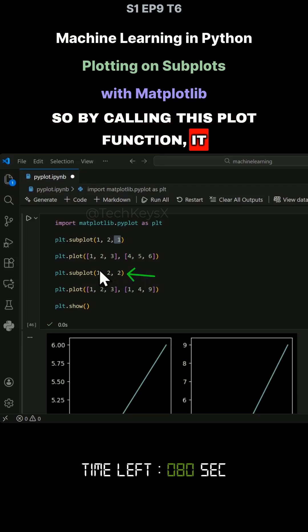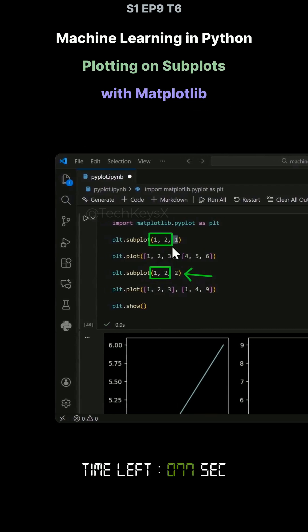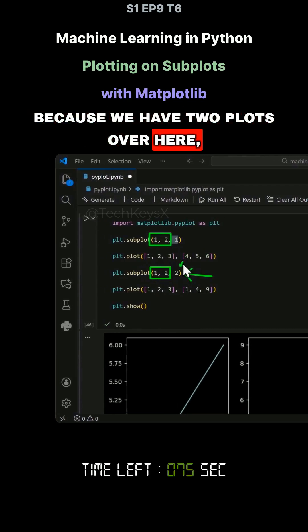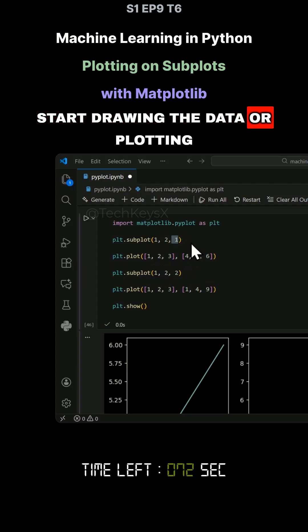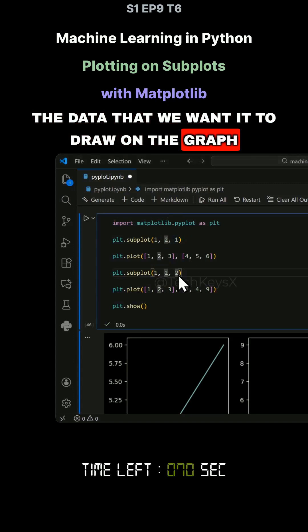So by calling this plot function, it needs to know where it needs to draw the line. So here we specified one. Because we have two plots over here, we wanted to select this one and start drawing the data or plotting the data that we want it to draw on the graph.